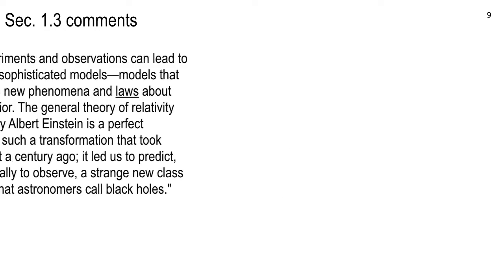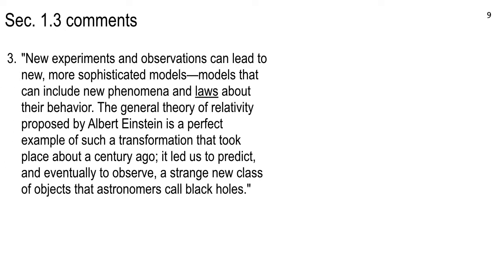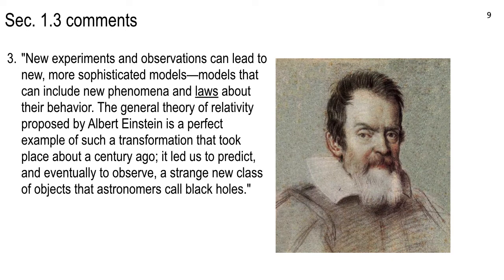All right. Some more comments from section 1.3. And that is, they made a comment there, the authors, that new experiments and observations can lead to new, more sophisticated models. Models that can include new phenomena and laws about their behavior. The general theory of relativity proposed by Albert Einstein is a perfect example of such a transformation that took place about a century ago, back in about 1905 and up to 1915. It led us to predict and eventually to observe a strange new class of objects that astronomers call black holes.